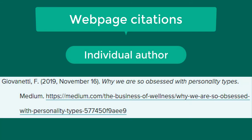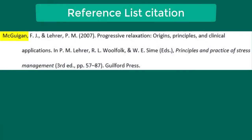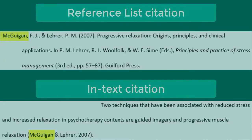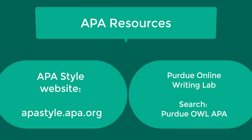Lastly, if you are citing a webpage that has an individual author, list that person as the author, then follow the same format including the date, the italicized title of the webpage, the website name, and the hyperlinked URL. Remember that the name or phrase listed at the beginning of each reference list citation must correspond to what is listed in your in-text citations. This is the case regardless of whether the author is an individual person or an organization. For more examples of how to cite other types of resources in APA format, you might refer to the APA style website or Purdue OWL, the online writing lab from Purdue University.